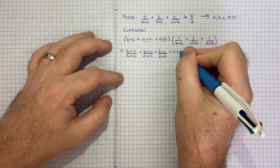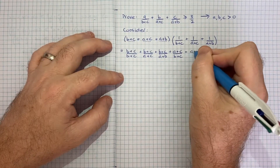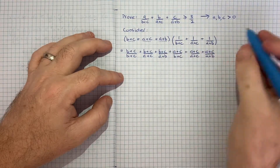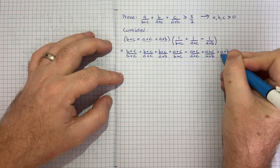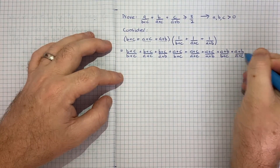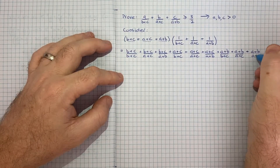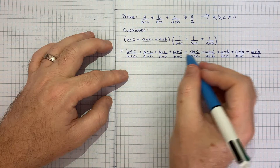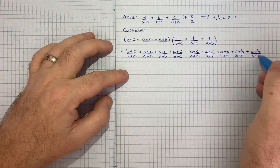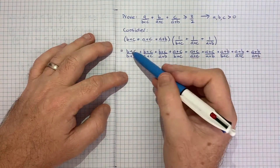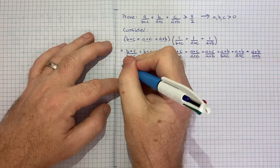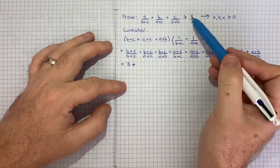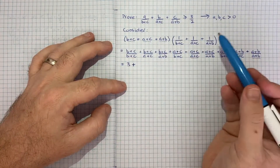Continuing the expansion, the next terms are (a+c)/(b+c) + (a+c)/(a+c) + (a+c)/(a+b), and finally (a+b)/(b+c) + (a+b)/(a+c) + (a+b)/(a+b). Notice that three of these terms — (b+c)/(b+c), (a+c)/(a+c), and (a+b)/(a+b) — all simplify to one, giving us three. Seeing that three appear is encouraging given our inequality involves 3/2.